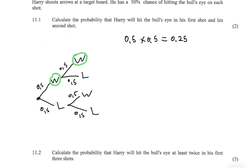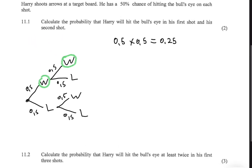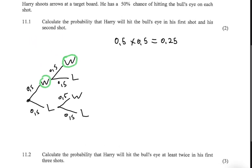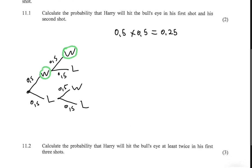Let's move to question 11.2c: calculate the probability that Harry Maguire will hit the bull's eye at least twice in his first three shots.